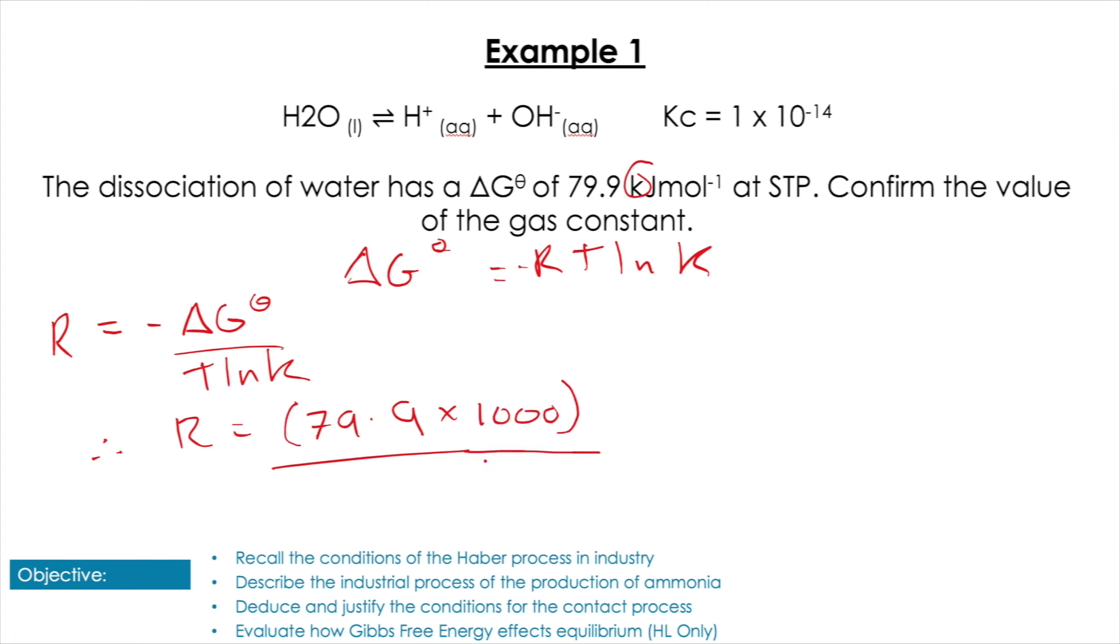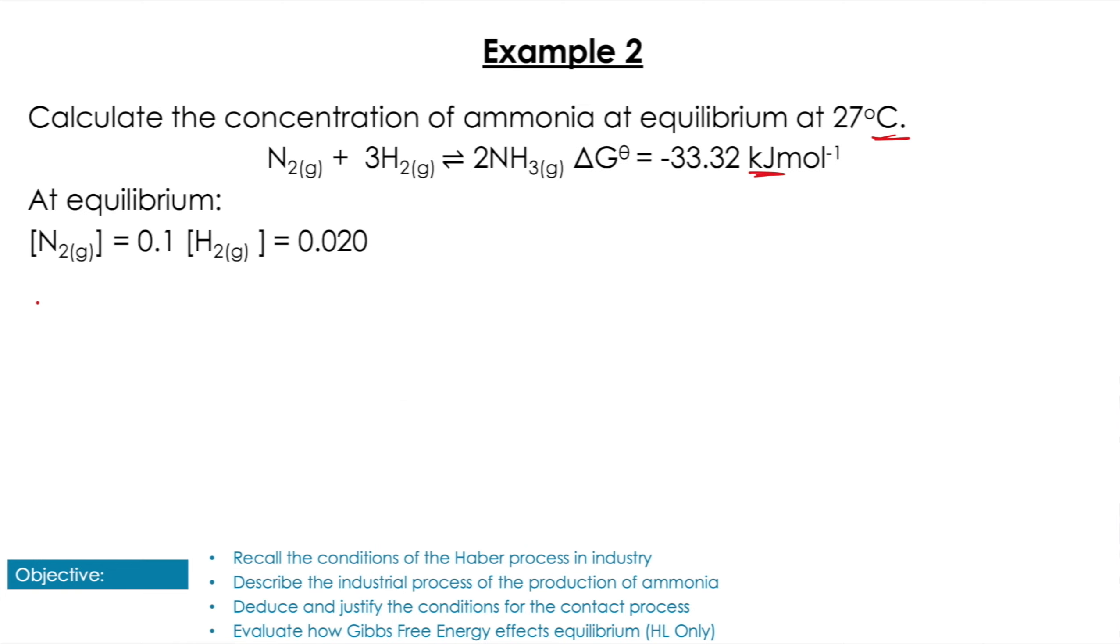And then do that divided by the temperature. The temperature here given to us at STP is going to be 298, multiplied by ln(1.1 × 10^-14). So if you plug that into your calculator, that is going to give you 8.31, which surprise surprise is the same value that they give you in the data booklet.